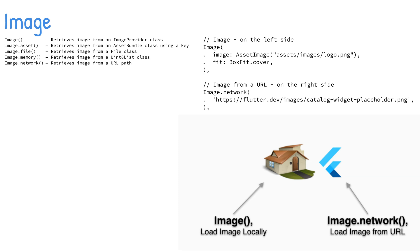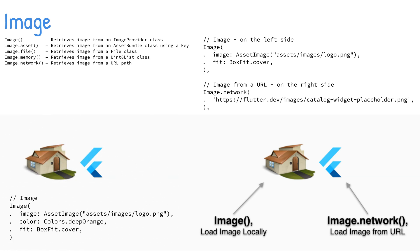ImageMemory retrieves an image from a Uint8List class. ImageNetwork retrieves an image from a URL path. If you add color to the image, it colorizes the image portion and leaves any transparencies alone, giving you a silhouette look.